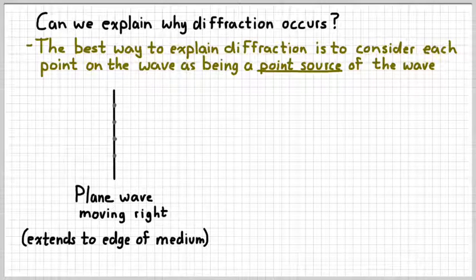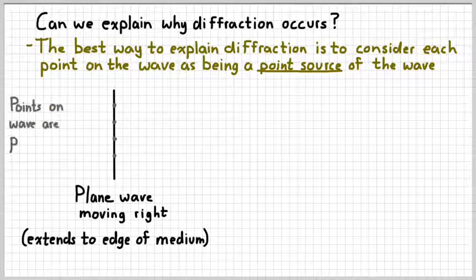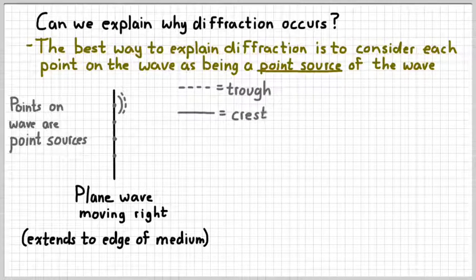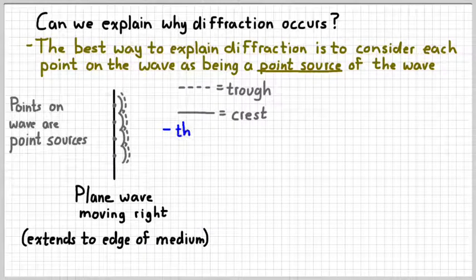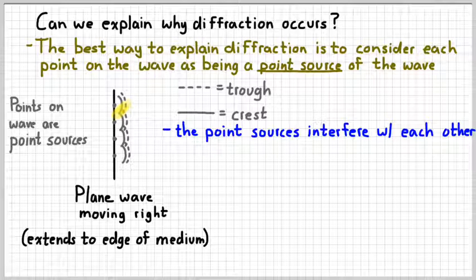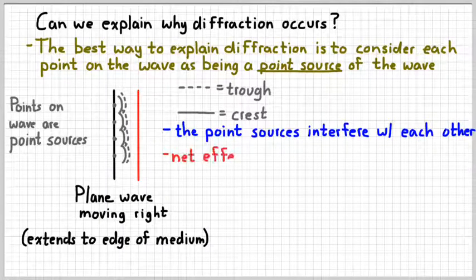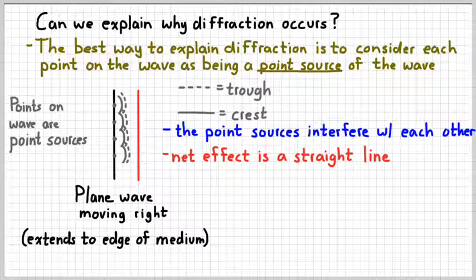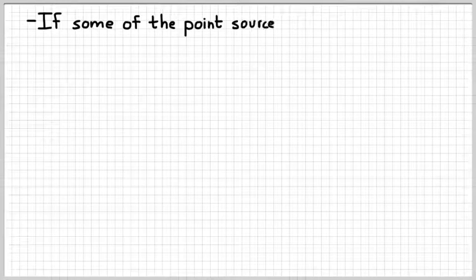I'm going to designate four points on that wave. The idea is that each of those four points acts like a source creating spherical waves — dashed lines represent troughs, solid lines represent crests. Because those point sources create waves spreading out in a spherical pattern, they're going to interfere with each other. Some points have crests and troughs lined up; other points have crests lined up. The net effect is that you just get another flat line, because the left and right parts of the waves balance each other out — the net effect is just a straight line.